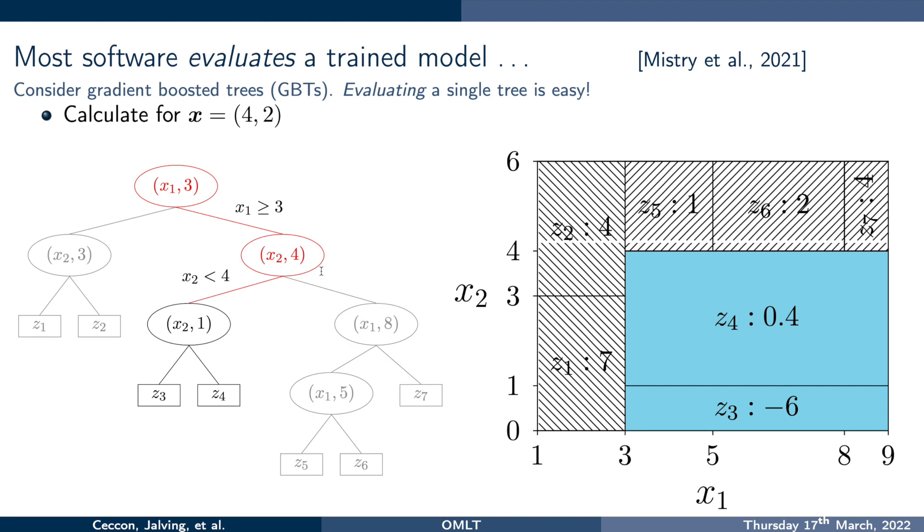Now, 2 is strictly less than 4, and so I'm going to take the left branch. Now, I get to a node in the tree that asks me to compare X2 to 1. And we have that X2 is greater than or equal to 1, and so I'm going to take the right branch. So, after all of that branching, I get to the value of that leaf. The value of that leaf is X4 is equal to 0.4. That is the output of this one tree.